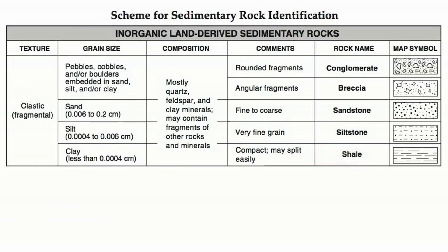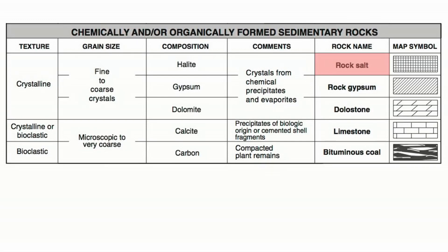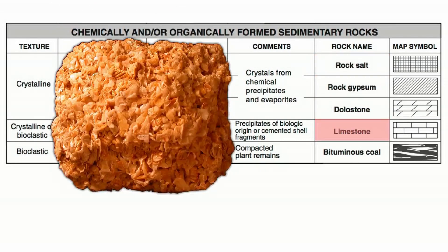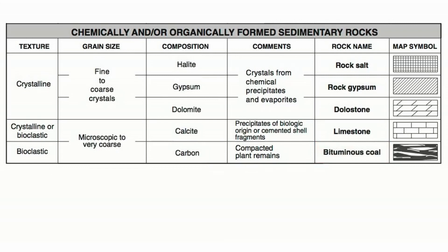We also have other types of sedimentary rocks. Some are called crystalline, like rock salt, which forms when minerals like halite are dissolved in water and that water evaporates — the crystals of the dissolved minerals stay behind. We also have bioclastic sedimentary rocks, like limestone. Bioclastic means living things stuck together — for example, this coquina is made of shells stuck together and is a type of limestone. Another example of a bioclastic rock is bituminous coal, made from compacted remains of plants.